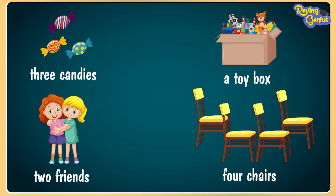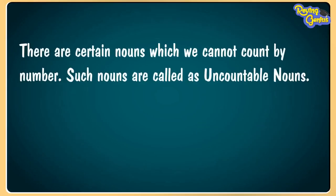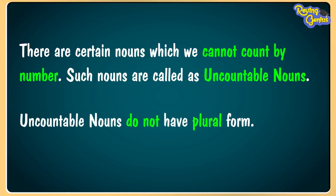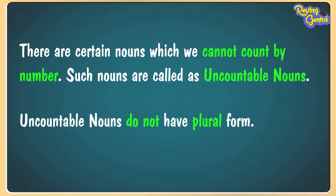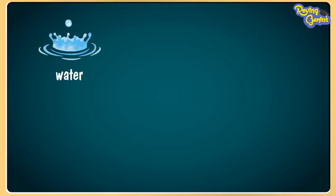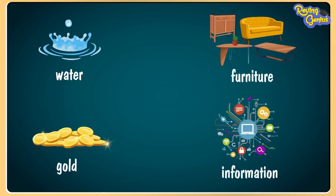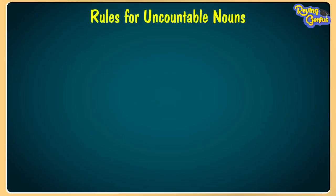On the other hand, there are certain nouns which we cannot count by number — such nouns are called uncountable nouns. Uncountable nouns do not have plural forms, for example: water, furniture, gold, information, etc.